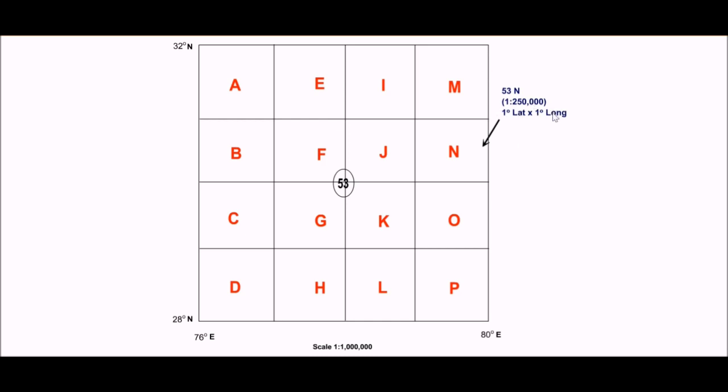So we started with 1 is to 10 to the power 6, now we are at 1 degree by 1 degree. If we want to reach at this point, this area, this is 53C, this is 53P and likewise. The scale here is 10 to the power 6 but the scale for this is 1 is to 250,000.